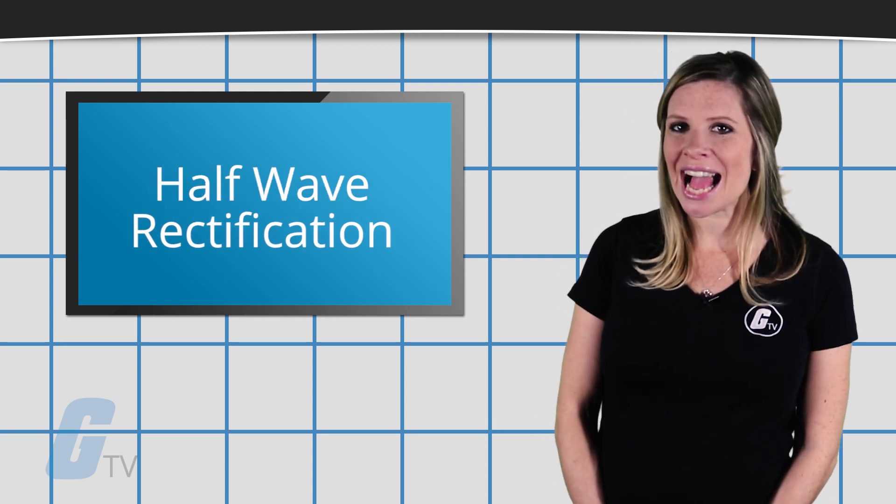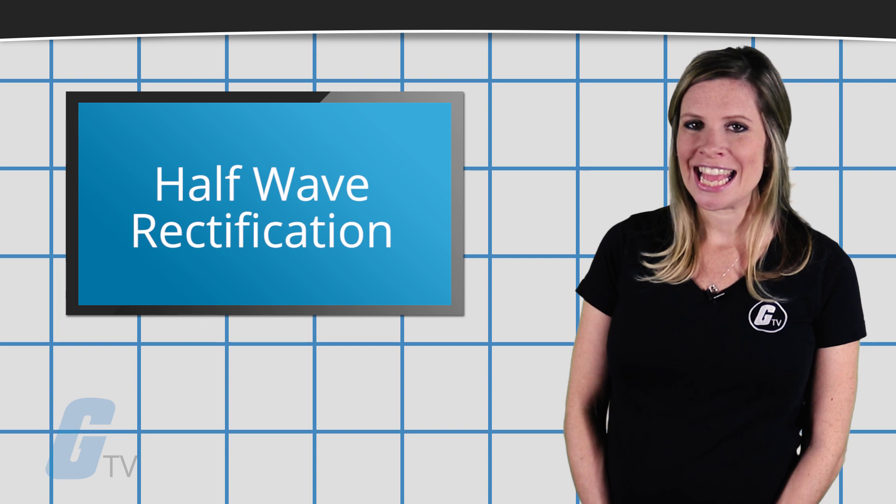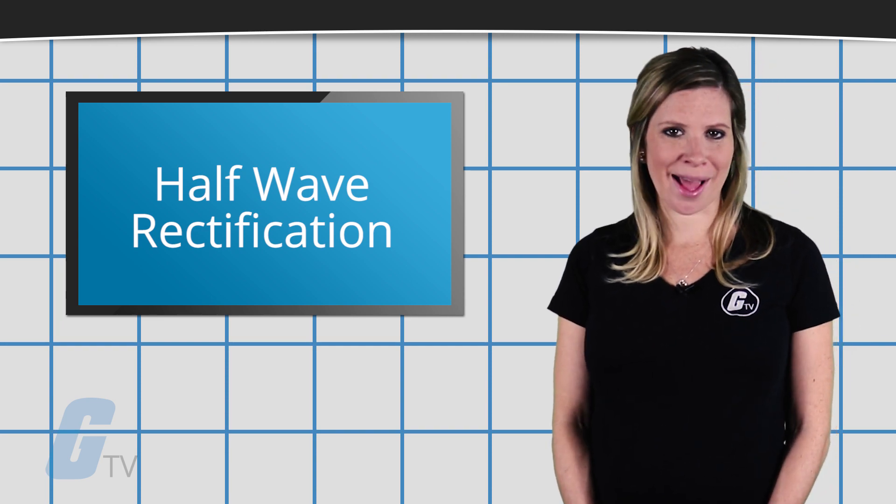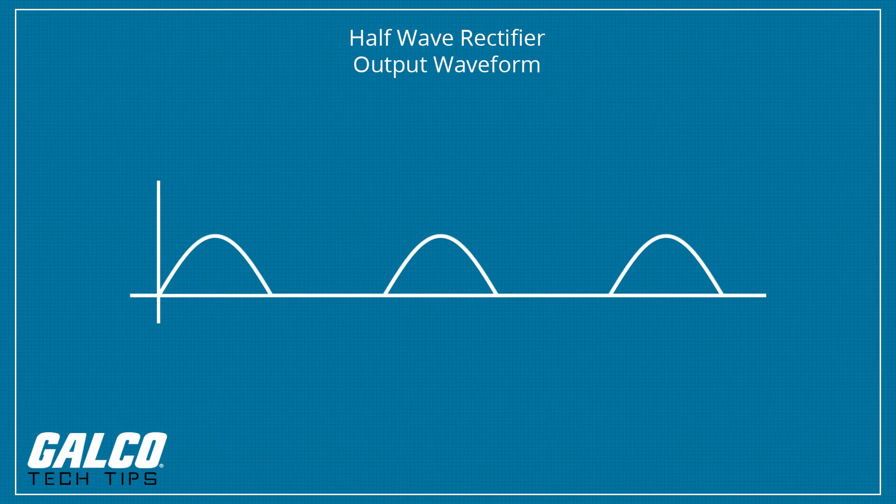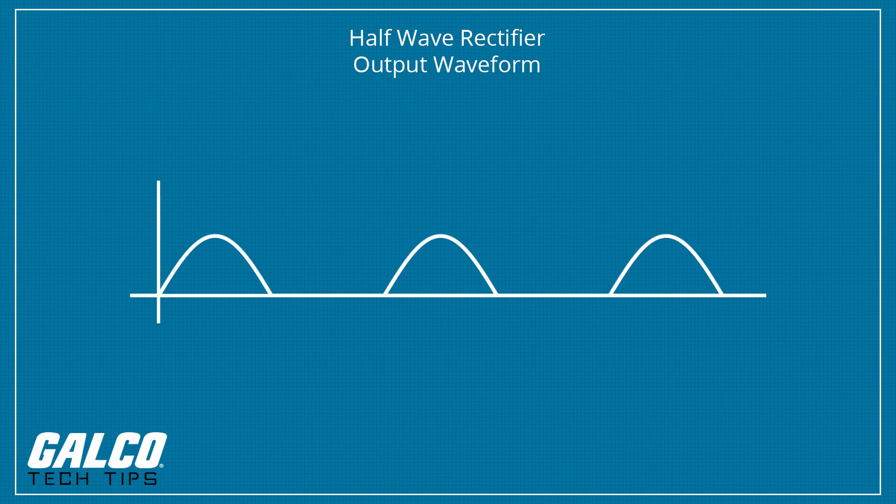The simplest kind of rectifier circuit is the half wave rectifier. A half wave rectifier is a circuit that allows only one half cycle of the AC voltage waveform to be applied to the load resulting in one non-alternating polarity across it. The resulting DC delivered to the load pulsates significantly.